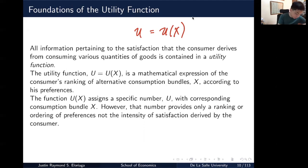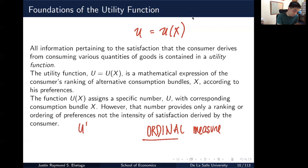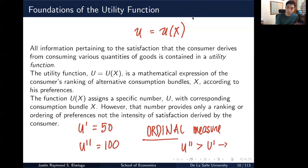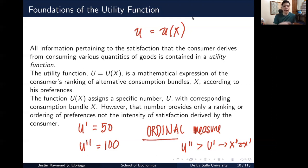Utility is merely an ordinal measure. For example, say we have utility value 1 equal to 50 and utility value 2 equal to 100. We can say that since utility 2 is higher than utility 1, the consumer prefers bundle X double prime to X prime — but it does not imply preference by twice as much, nor does it mean that purchasing two bundles of X prime would make you indifferent to X double prime. It's just an ordinal measure and has nothing to do with the intensity of satisfaction derived from consumption.